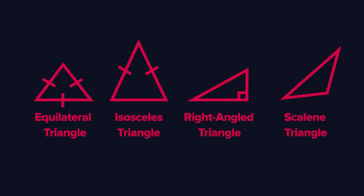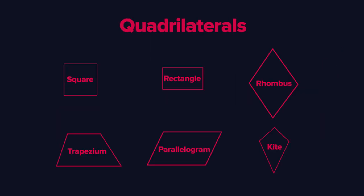Starting with three sides — I'm pretty sure you already know these are called triangles. There may be different types, but they all have three sides and three angles. Next come quadrilaterals: four sides, four angles.